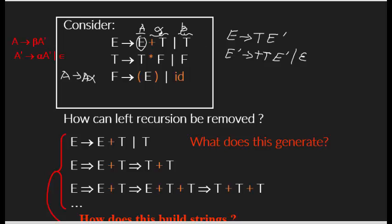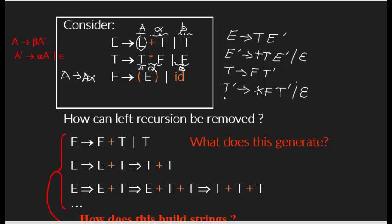If you can classify which is alpha and which is beta, everything falls into place — and memorize the formula. For the next grammar, T is A, alpha is star F, and beta is F. So T goes to F T-prime, and T-prime goes to star F T-prime or epsilon.